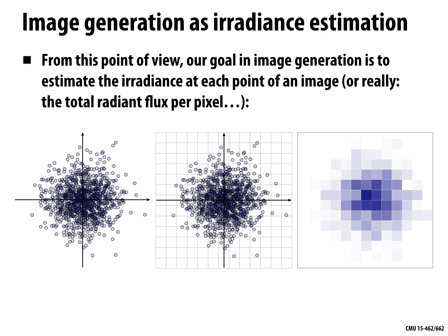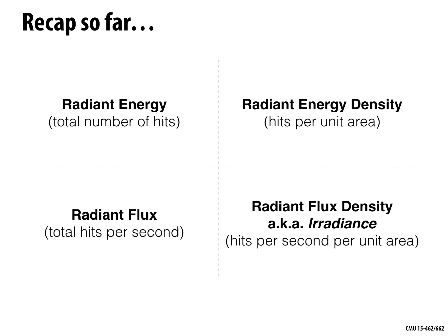So to recap: radiant energy is the total number of hits. We can break that down in space and time. Breaking down over time gives radiant flux — hits per second. Breaking down over space gives radiant energy density — hits per unit area. What we really care about for image generation is the energy per unit area per time — the radiant flux density, commonly abbreviated as irradiance.